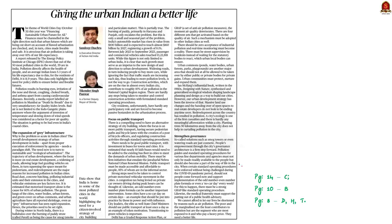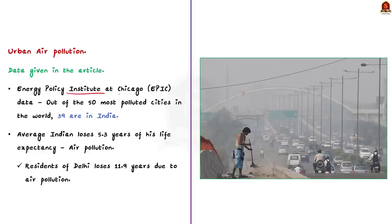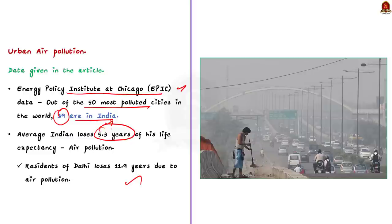This editorial article talks about the issue of urban air pollution. The author points to shocking data from the Energy Policy Institute of Chicago, showing that out of the 50 most polluted cities in the world, 39 are from India. He also points out that pollution directly affects health — the average Indian loses 5.3 years of life expectancy due to air pollution. For Delhi residents, the average Delhiite loses 11.9 years due to air pollution.